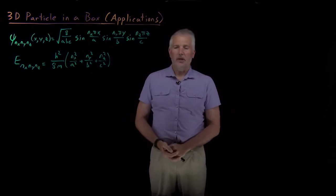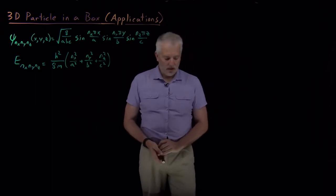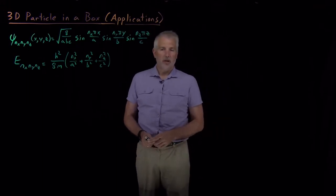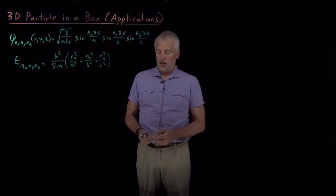So we might ask ourselves, what real-world problems could this be applicable to? Just as we did for the one-dimensional particle-in-a-box, it turned out linear conjugated hydrocarbons, or electrons in those linear conjugated hydrocarbons, were well-described by the one-dimensional particle-in-a-box.